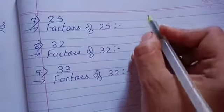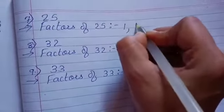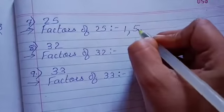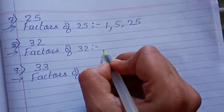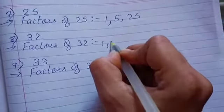Now let's see 25. The factor of 25 is going in table 1, 5, and 25 itself.